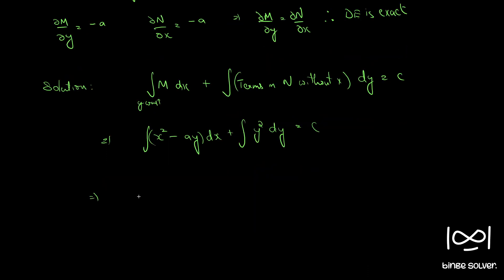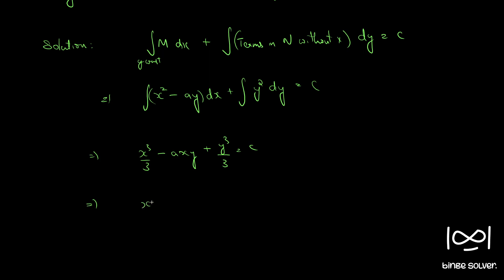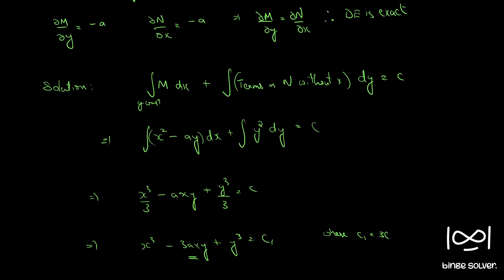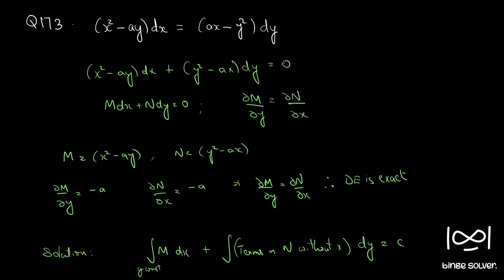Which is x³/3 - axy + y³/3 = c. Multiplying throughout by 3, you get x³ - 3axy + y³ = c₁. So this is the solution to question number 173.